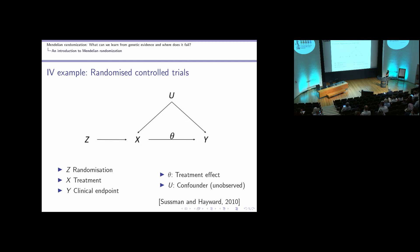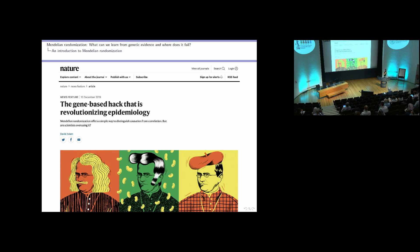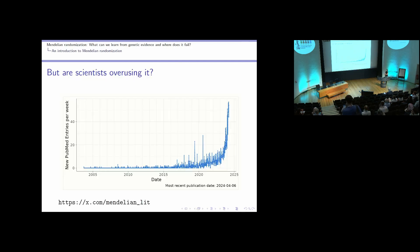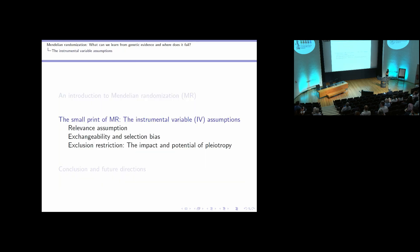In recent years there has been quite a bit of hype about Mendelian randomization. Nature called it in 2019 'the gene-based tactic is revolutionizing epidemiology,' but with a warning: 'Are scientists overusing it?' There has been an exponential increase in MR publications. The question is when does MR work and where does it fail — and everything here boils down to the instrumental variable assumptions.